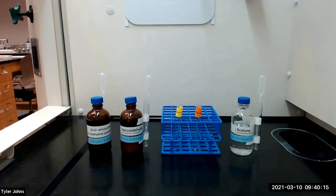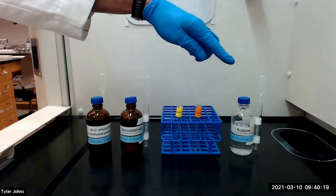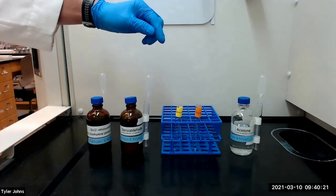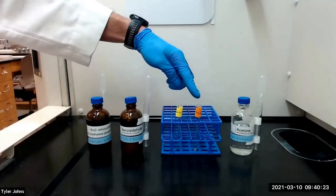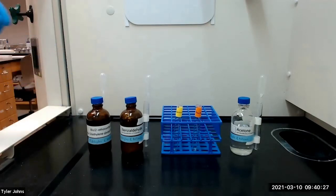We will practice the Tollens test with two known compounds, benzaldehyde and acetone, and we will begin by dissolving a couple drops of each compound in separate test tubes with a minimum amount of diethylene glycol diethyl ether.